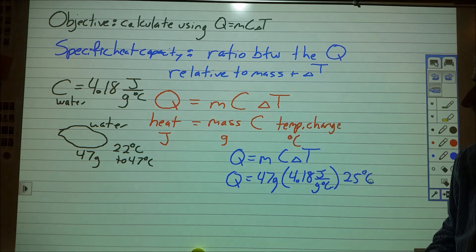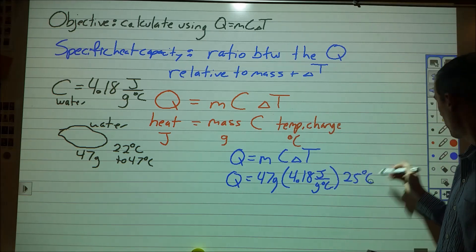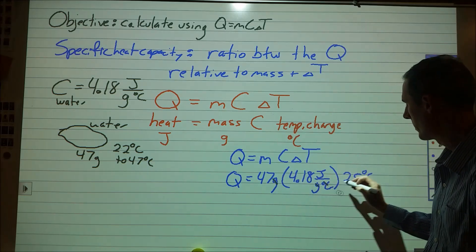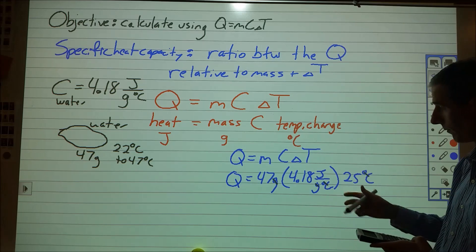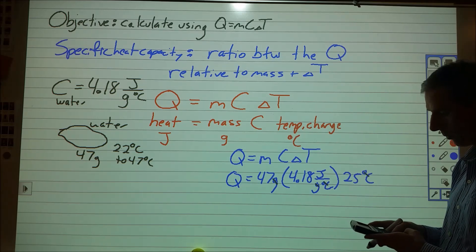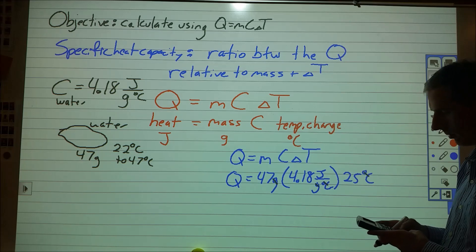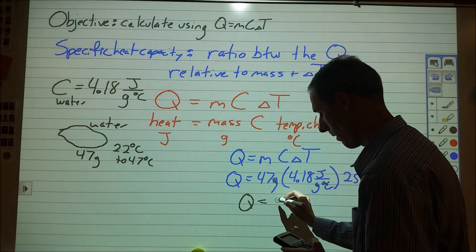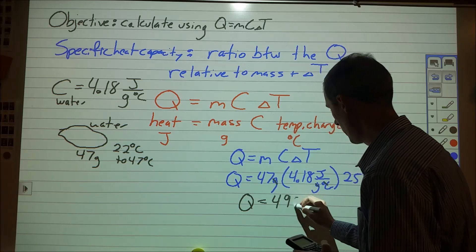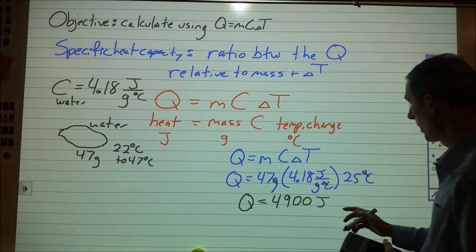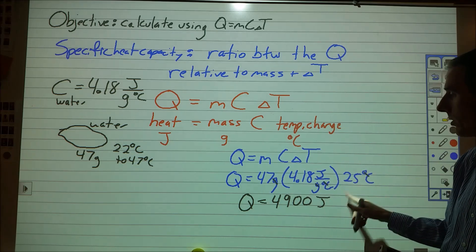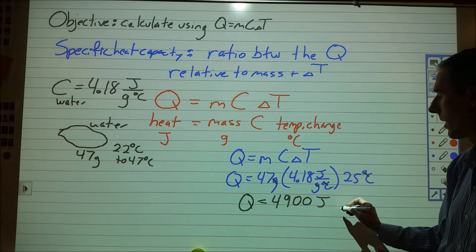So what we could then do is multiply this out, and what you'll notice is that the grams cancel, the degrees Celsius cancel, and we're left with joules. So 47 times 4.18 times 25 comes out to a final answer of 4,900 joules — rounded to match our significant figures — and that's our final answer.